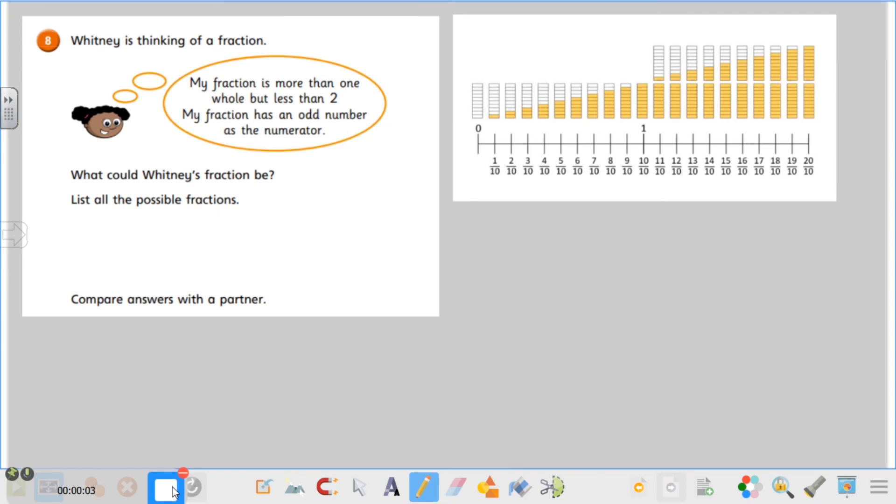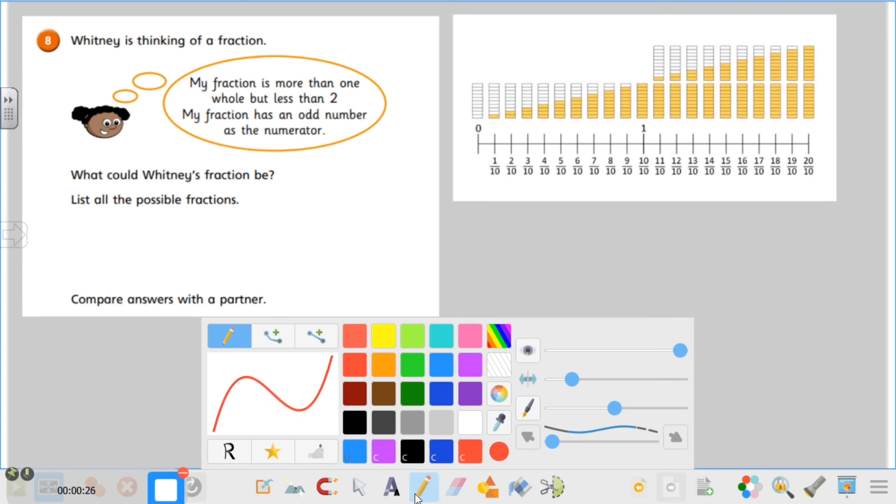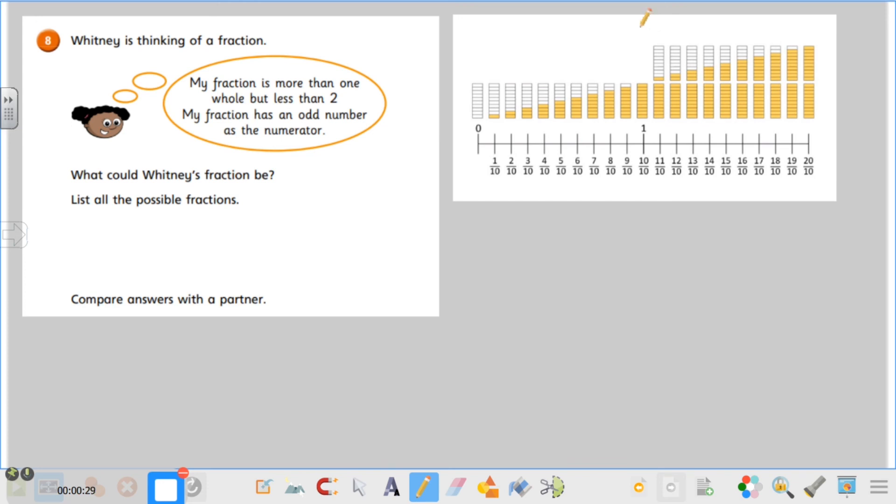Last question then, question 8. Whitney is thinking of a fraction. My fraction is more than one whole but less than two. My fraction has an odd number as the numerator. What could Whitney's fraction be? List all of the possible fractions. From the video I have taken the representation that they showed us. So Whitney says that her fraction is more than one whole, so that means it has to be more than this one here. So we can get rid of all of these, we don't need to look at this side, we can cross that off, it won't be any of them. But less than two, so that's great, so we've got this section up to here.